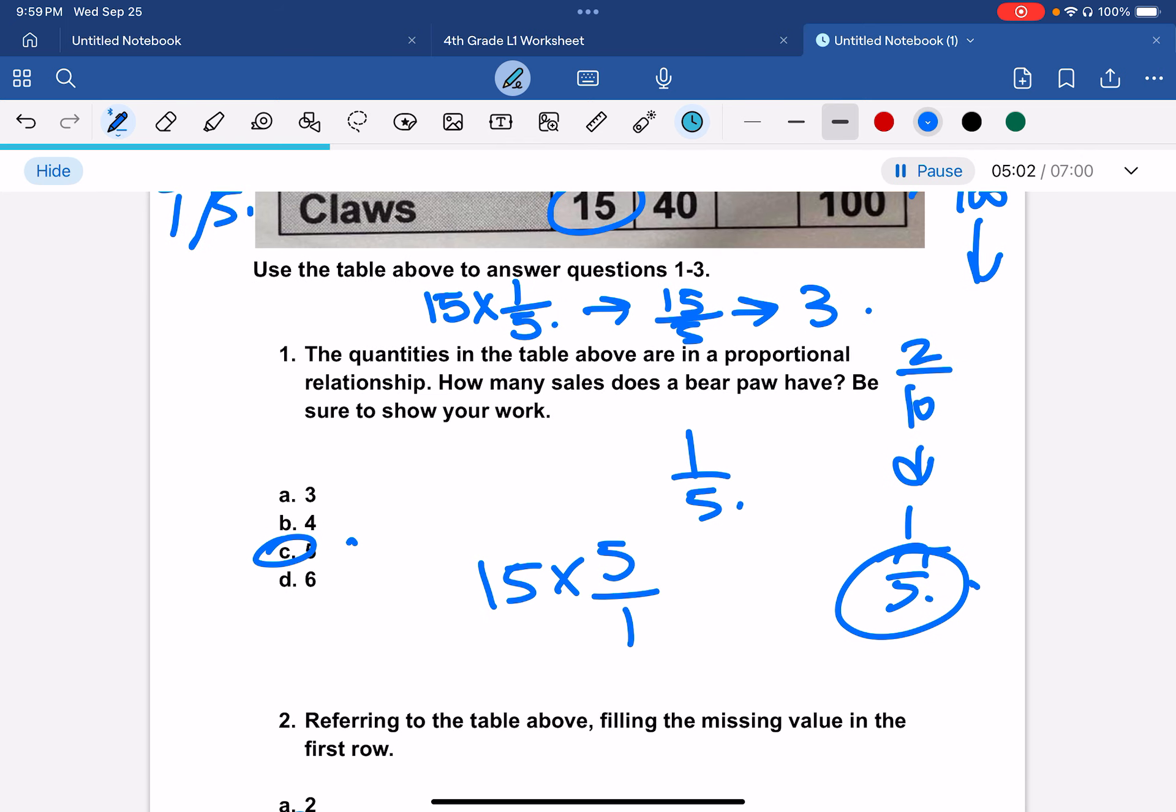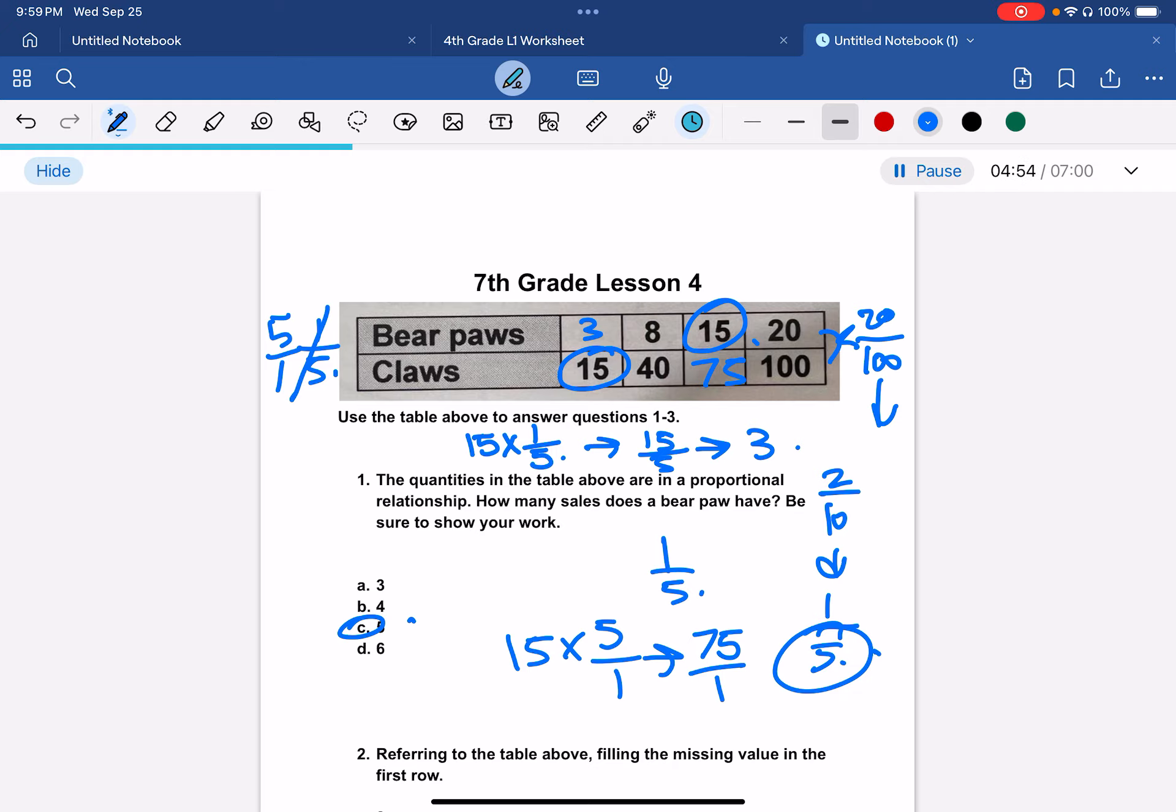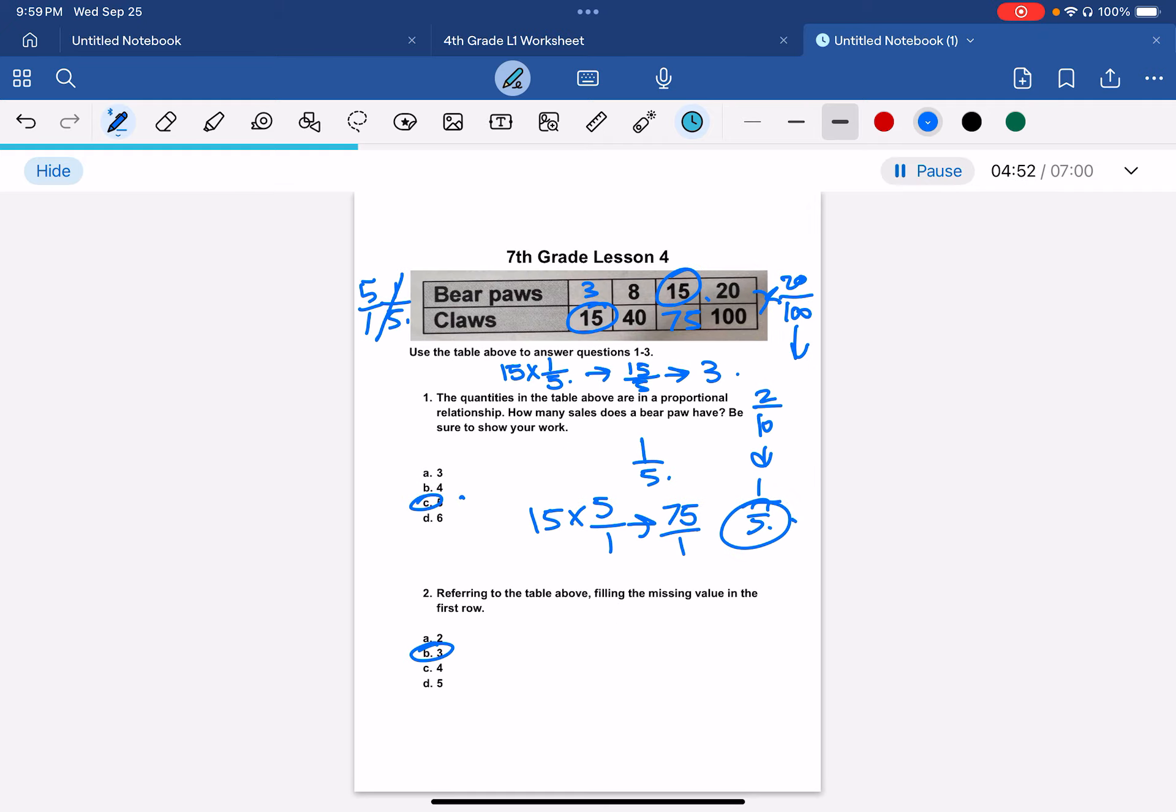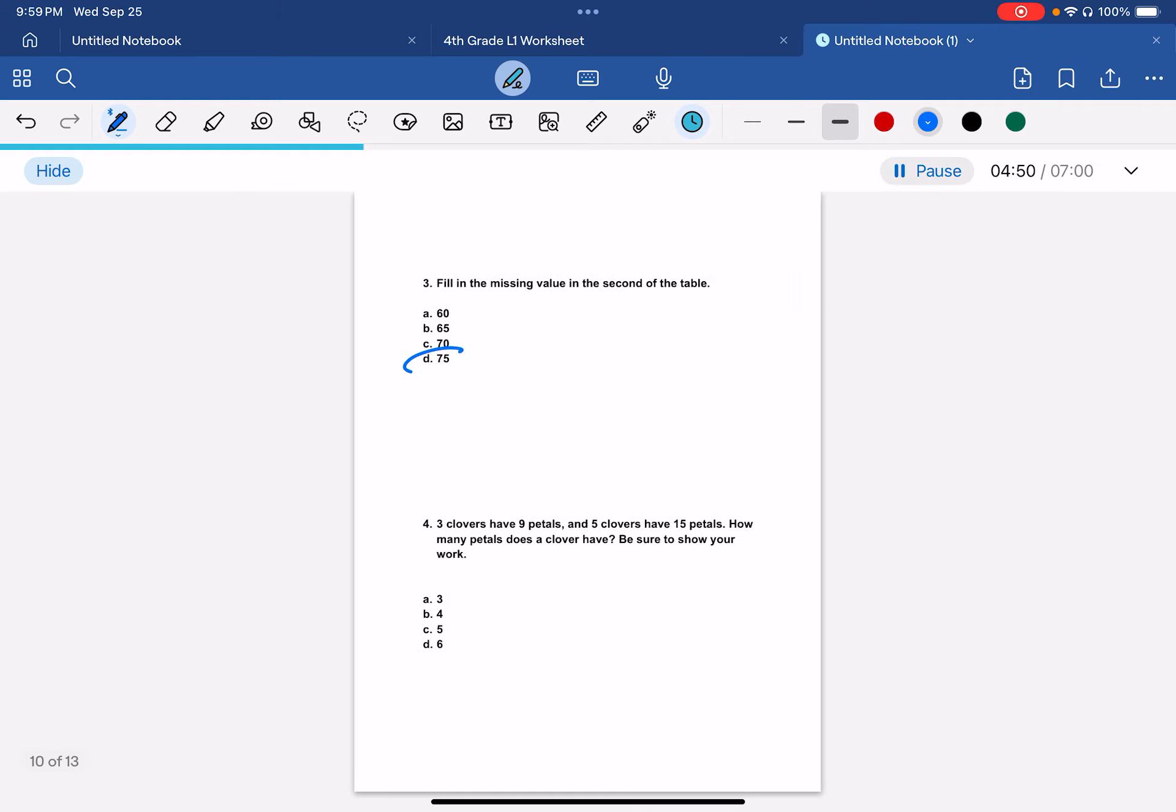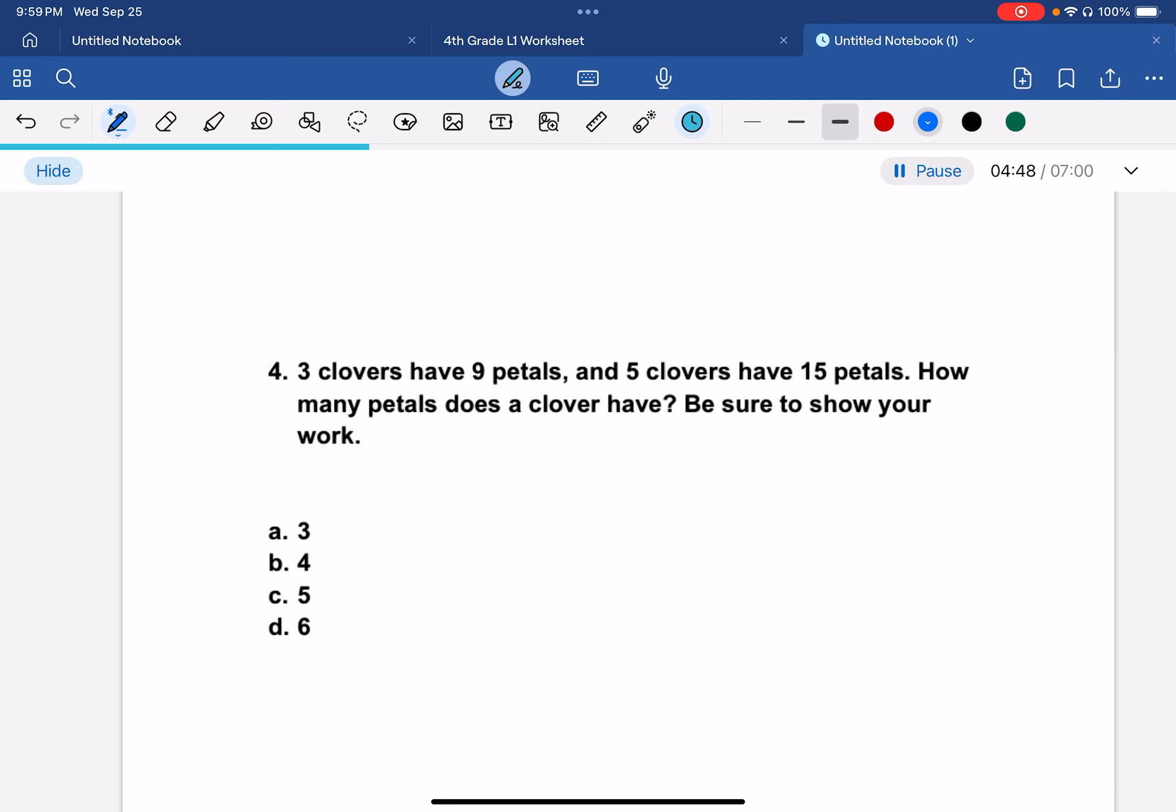So we would do 15 times 5 over 1, which would be 75 over 1. So this would be 75, which is d.